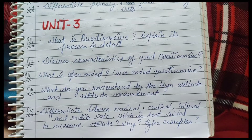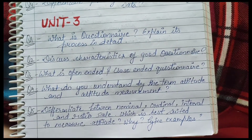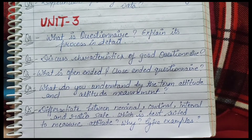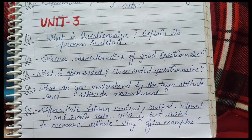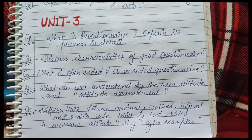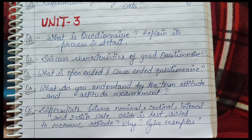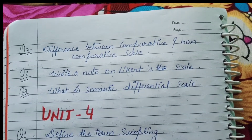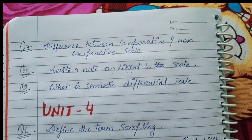Here are the third unit questions. What is questionnaire? Explain its processes in detail. Question number second: discuss characteristics of a good questionnaire. What is open-ended and close-ended questionnaire? What do you understand by the term attitude and attitude measurement? Differentiate between nominal, ordinal, interval and ratio scale — which is the best suitable to measure attitude? Why? Give an example.